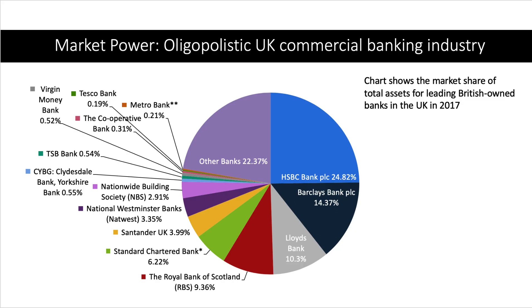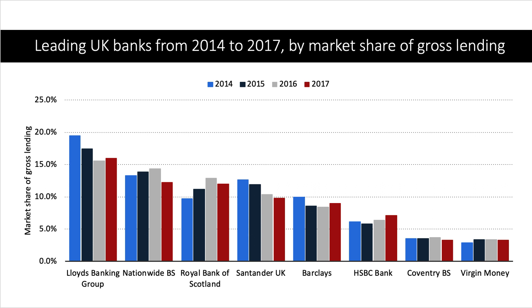Focusing more on market power as a source of financial failure: the UK banking sector is dominated by a handful of very large banks — Lloyds Group, Barclays, HSBC, Royal Bank of Scotland and others. In terms of market share for all categories of business, the market in banking in the UK is clearly oligopolistic. This chart shows the market share of total assets for leading British-owned banks in 2017, showing the dominance of Lloyds, Barclays, HSBC and RBS just under 10% of assets. Looking at gross lending — including mortgages, personal loans and overdrafts — the market share from 2014 to 2017 again shows big banks with significant market share.